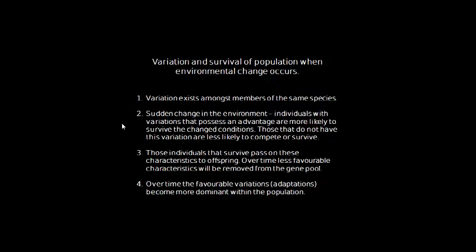It's very important to note that variation exists amongst members of the same species — we've seen that through examples of the dog, budgerigar, and even humans. So variation exists amongst members of the same species first. Then there is a sudden change in the environment. Individuals with variations that possess an advantage are more likely to survive the changed conditions, while those that do not have this variation are less likely to compete or survive. It's not necessarily that they'll die straight away — they just might not be able to successfully breed, which still has the same detrimental effect over time.